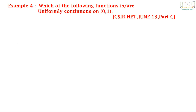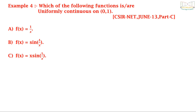Example 4: Which of the following functions are uniformly continuous on (0,1)? The options are: A, f(x) = 1/x; B, f(x) = sin(1/x); C, f(x) = x·sin(1/x); and D, f(x) = cos(x)/x. This question was asked in CSIR NET June 2013 Part C.